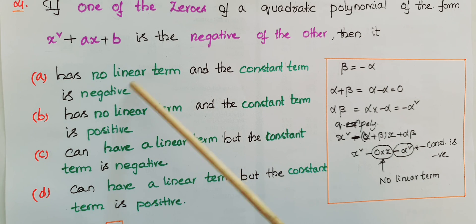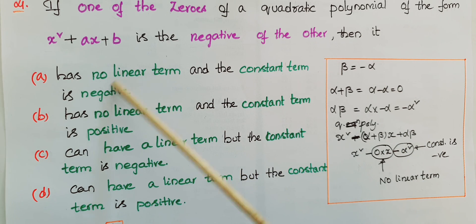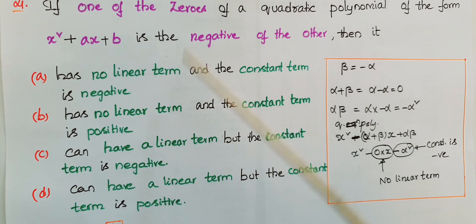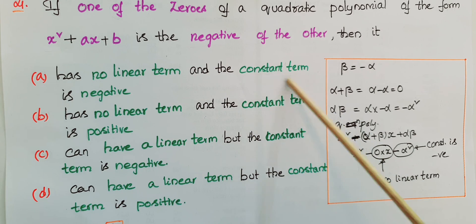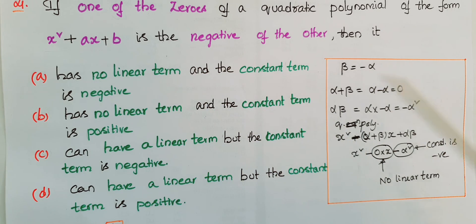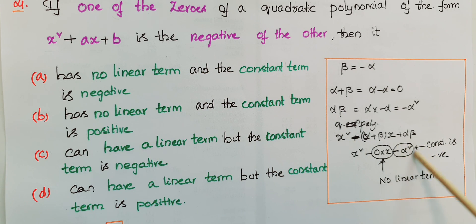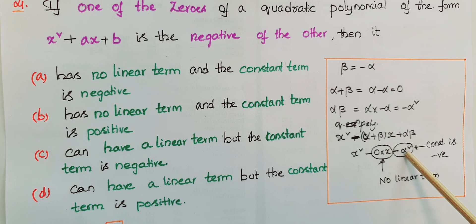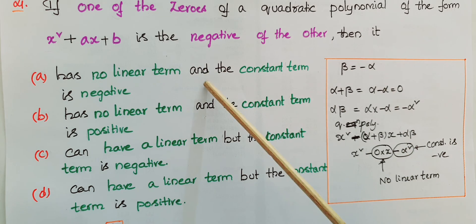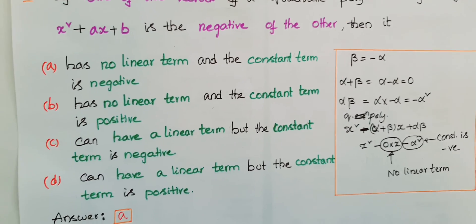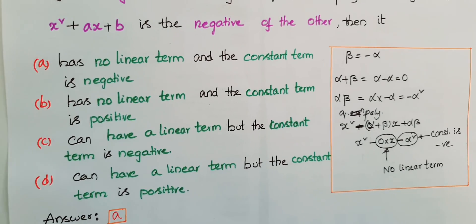The linear term (degree 1 in x) is absent, and the constant term is −alpha², which is negative. So the first option — no linear term and negative constant term — is correct. The answer is A.